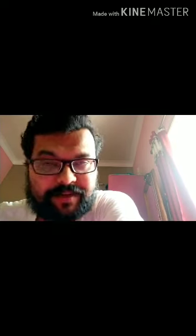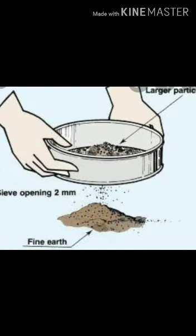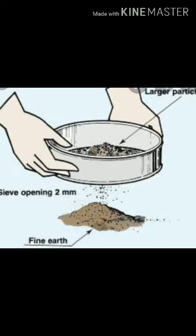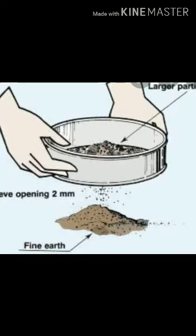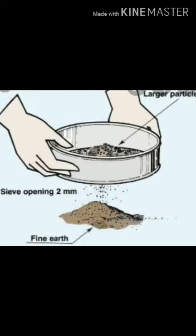The first separation method we will look at is the sieving method. Different components of a mixture have defined physical properties, and we select the appropriate method of separation accordingly. Sieving is used to separate undesirable substances from a mixture. It is based on the difference in the size of the components. The mixture is placed in a sieve, a bowl is kept under the sieve, and the sieve is moved to and fro.